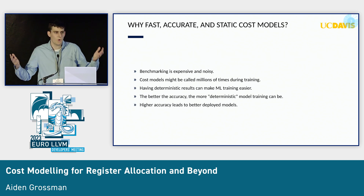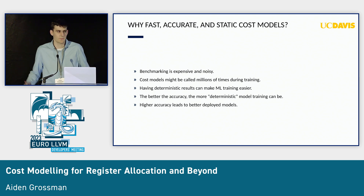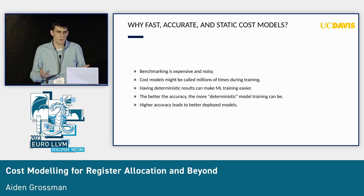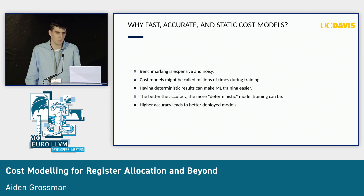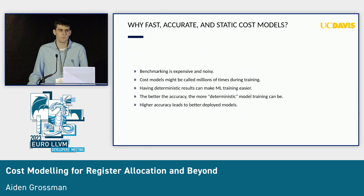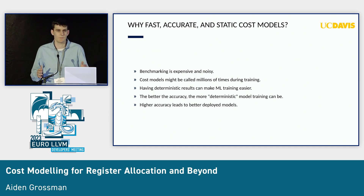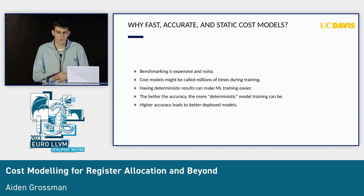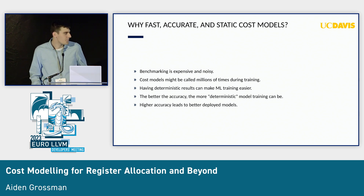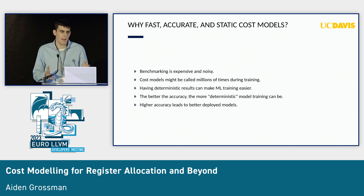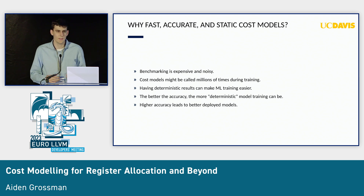Why is having these kinds of cost models important? We care primarily because we want cost models — we could just do benchmarking, but benchmarking can be pretty expensive and it's also noisy. Ideally when we're training machine learning models, we want to have deterministic reward metrics, because you can do noisy rewards, but it makes things more complicated. The better the accuracy of the cost model, the more deterministic model training is.